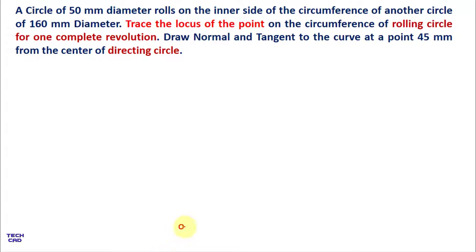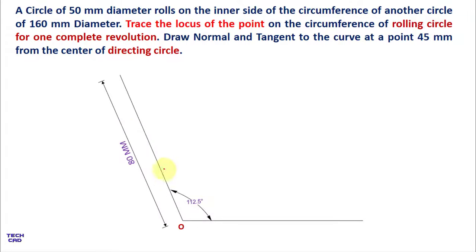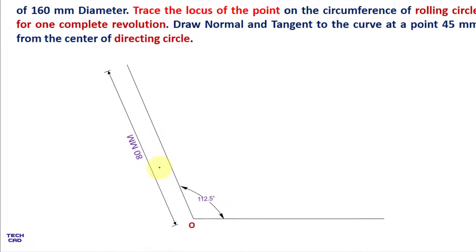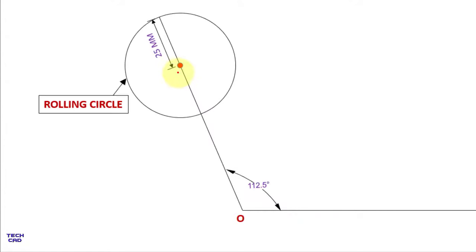First, make a point and draw a horizontal line. With a protractor, mark the angle of 112.5 degrees and draw a line of 80 mm, which gives the radius of the directing circle. From the end of that line, measure inward 25 mm and mark a point, which is the center of the rolling circle.